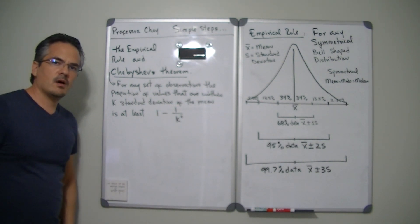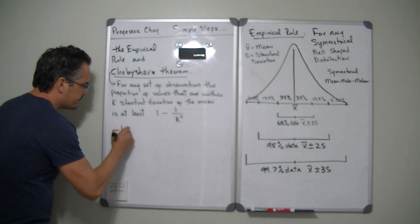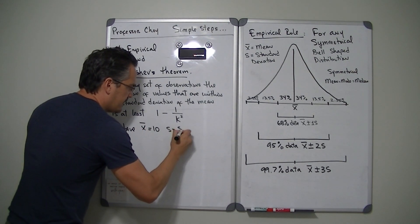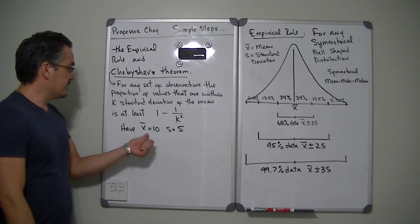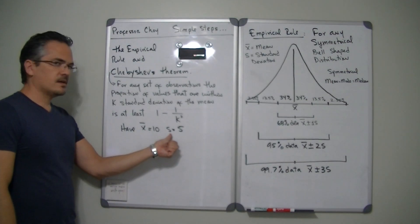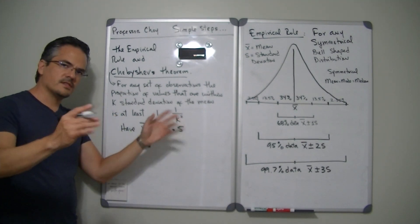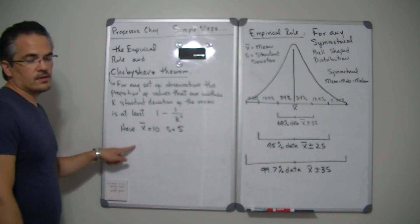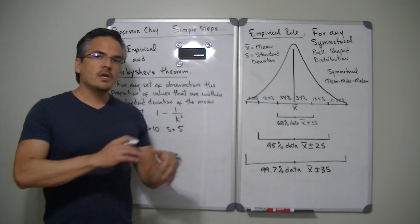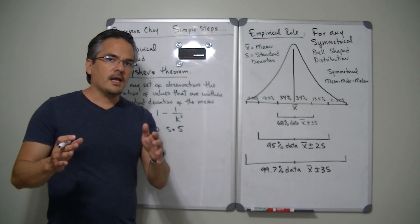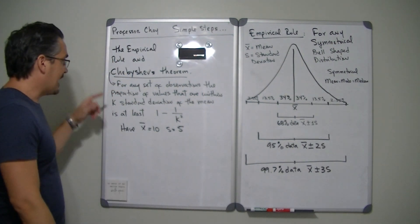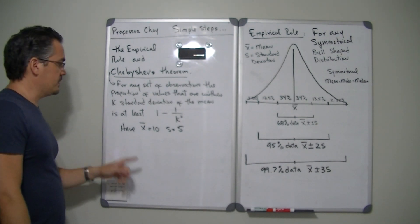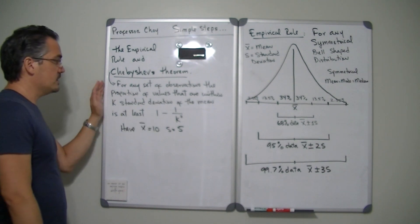Let's come up with an example. Imagine that you have an x-bar equal to 10 and an s equal to 5. So x-bar is our mean and s is our standard deviation — values you've calculated for your data set. According to Chebyshev, it doesn't matter whether the data set is right skewed, left skewed, symmetrical, or any other shape. You can find the proportion of data within particular standard deviations of the mean by following his formula.